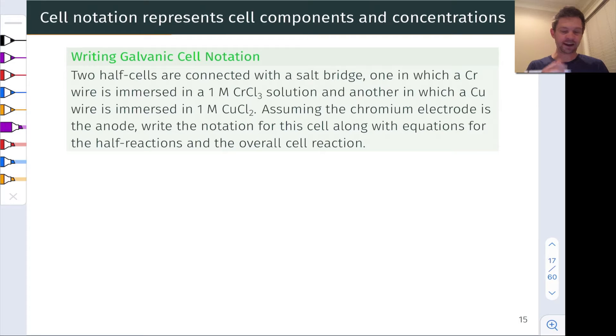In this practice problem, we're given a textual description of a galvanic cell and asked to write the notation for the cell along with the half reactions as well as the overall cell reaction.